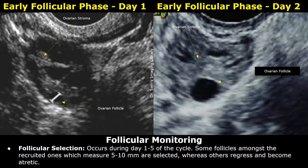These are the follicles that grow later in the next cycle. After the recruitment process finishes at the end of the previous cycle, the next cycle starts. The first phase of the menstrual cycle is the follicular phase, approximately the first 13 days. This phase is divided into early, mid, and late follicular phases. The early follicular phase is usually the first five days of a 28-day cycle. These images are obtained at day one and day two of the cycle from two different patients, showing how ovaries typically appear during this phase.